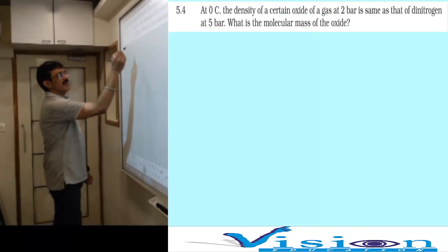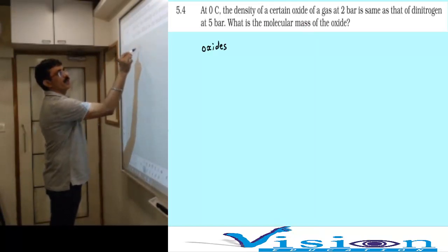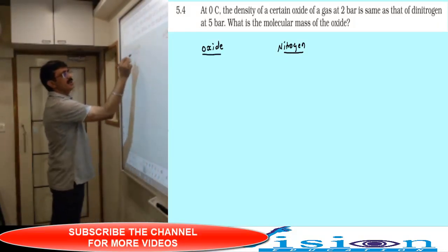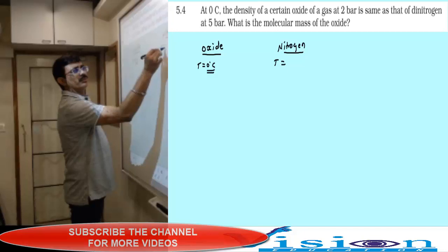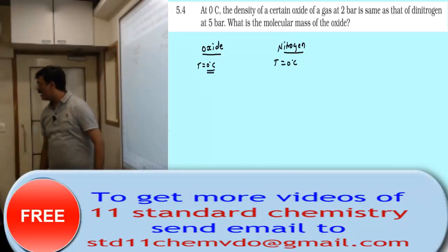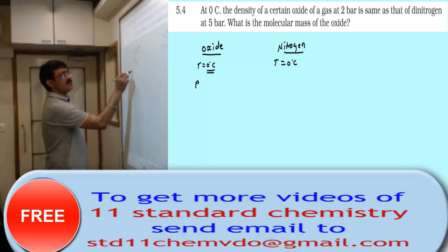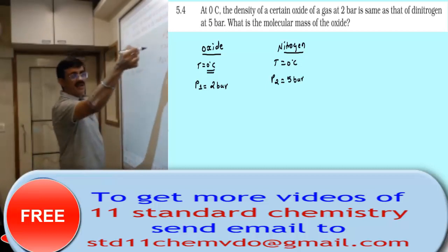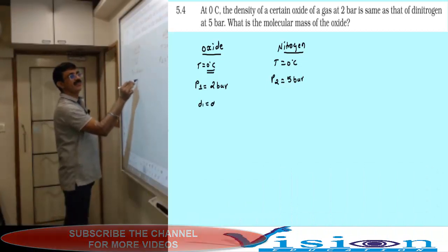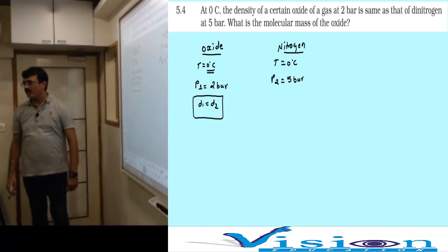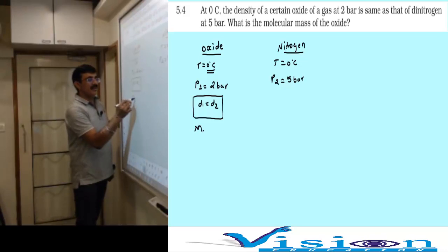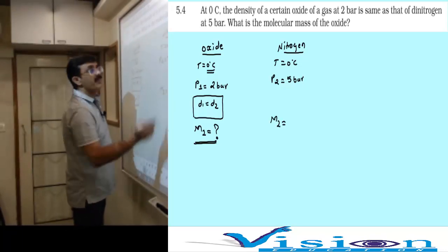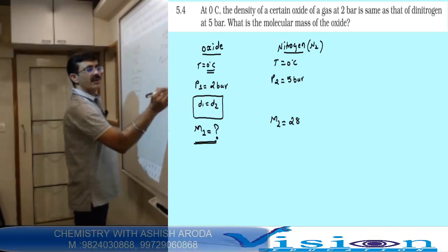There are two gases: one is a certain oxide, and second is dinitrogen. They said if you keep the temperature 0 degree Celsius, then density is same. The oxide gas is kept at 2 bar and the dinitrogen gas is kept at 5 bar with temperature constant. What is the molecular mass of oxide?